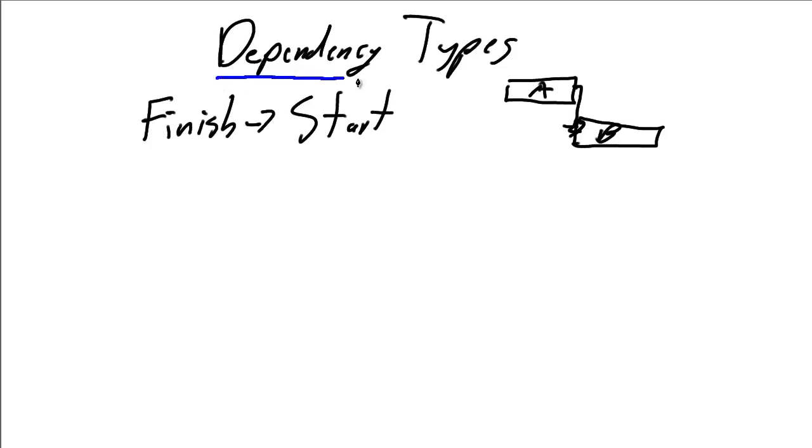But the good news is setting your project dependencies is relatively straightforward. There are four dependency types we need to be aware of, and the Finish-to-Start is the most common dependency type you're going to use in your project.